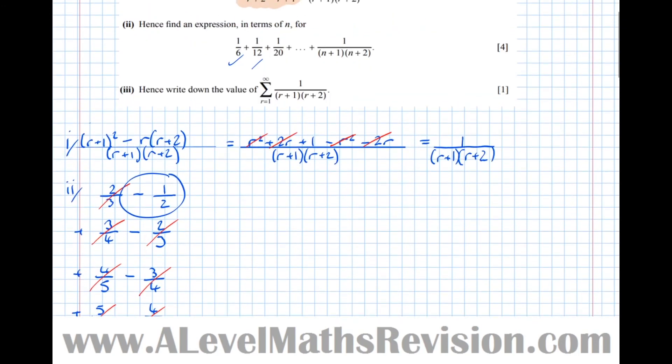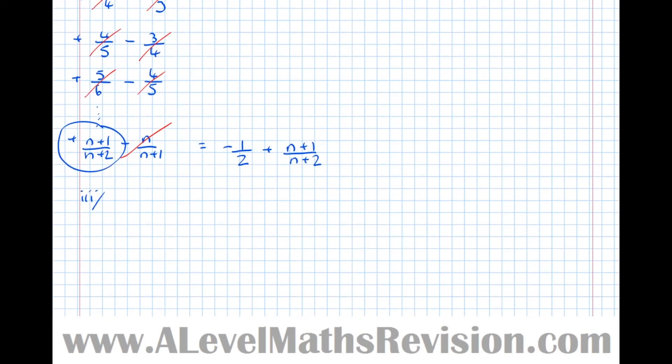Now part 3, hence write down the expression for the sum to infinity. So part 3, the sum to infinity. So as n approaches infinity, n plus 1 over n plus 2 approaches. Well, as these terms get bigger and bigger and bigger, the plus 1 and the plus 2 become insignificant. So we end up with n over n, which is 1. Therefore, the sum to infinity, if this term approaches 1, as the terms get bigger and bigger and bigger, s infinity is equal to minus 1 half plus 1 equals 1 half.